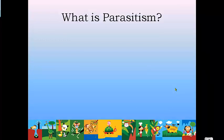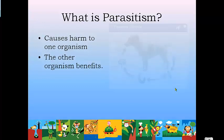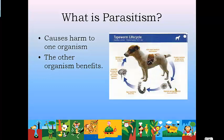In parasitism, one organism is harmed — sometimes to the point of death — and the other organism benefits. An example is a tapeworm and a dog. The tapeworm gets inside the dog and ends up eating the food and feces from the dog, so it benefits. It gets to grow and have a free food supply. However, as the tapeworm is growing, it damages the internal structure of the dog, and the dog can end up dying. The tapeworm benefits; the dog does not.